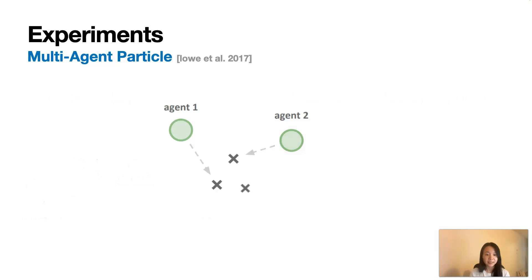The next task is the simple reference game from the multi-agent particle environment. In this task, there are three distinct landmarks and two agents. Each agent wants to get to their target landmark, which is known only by the other agent. Reward is collective, so agents have to learn to communicate the goal of the other agents and navigate to their landmark.